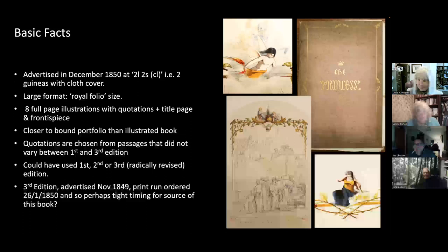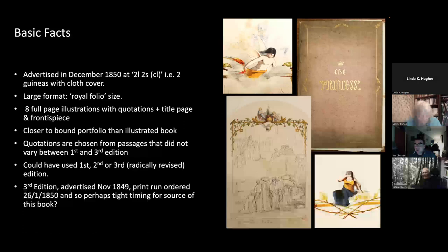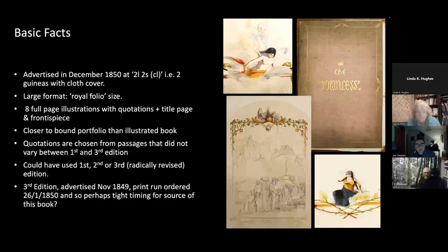The basic facts: the book, as it looks when closed, was advertised in December 1850 at two pounds two shillings - i.e. two guineas - with a cloth cover. That's expensive. It's huge: royal folio size, a great big book. This is not a book you could read on a train or carry around - it's really only the sort of book you could open in front of you on a table. There are eight full page illustrations with quotations, a title page, and a frontispiece. It's closer to a bound portfolio than an illustrated book.